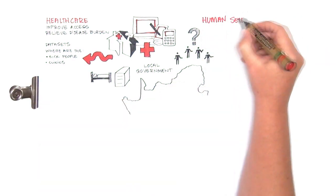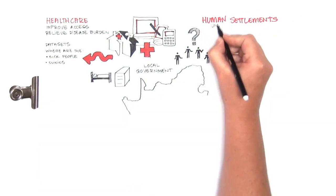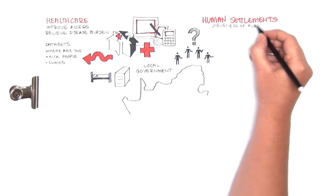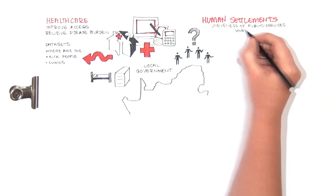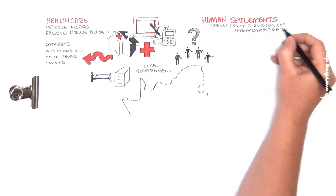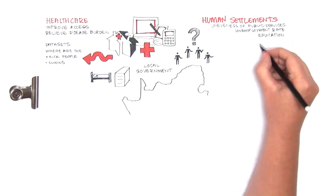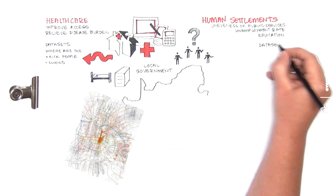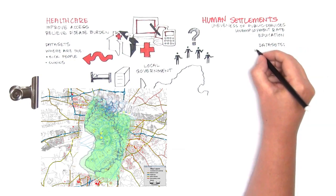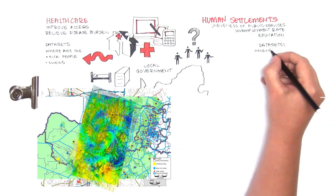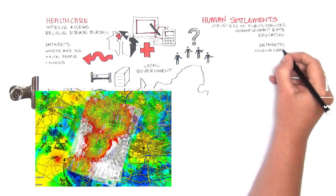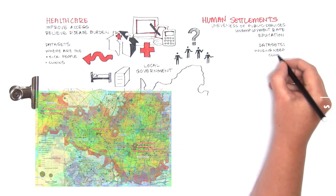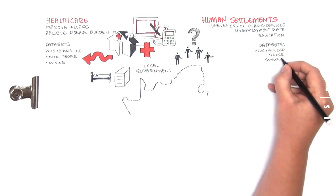The next example would be around human settlements. The challenges we want to address would include unevenness of public services, high unemployment rate, access to education. Some of the datasets involved would include an indication of demand, the housing need, location of clinics and schools and their proximity to settlements. These datasets will once again be captured and analyzed in a geographical context.